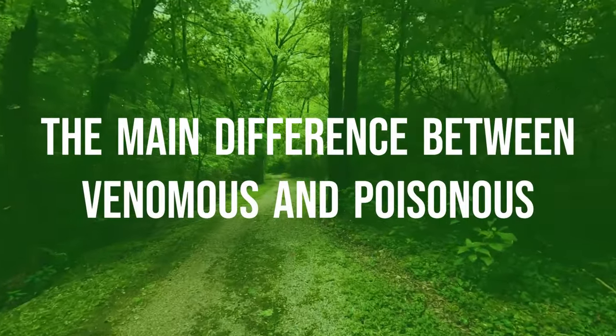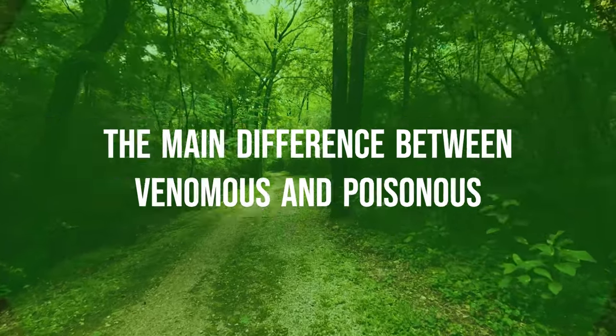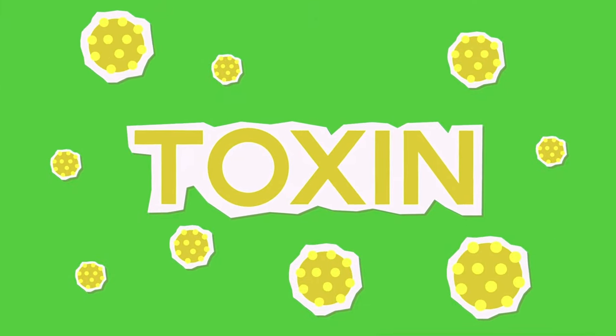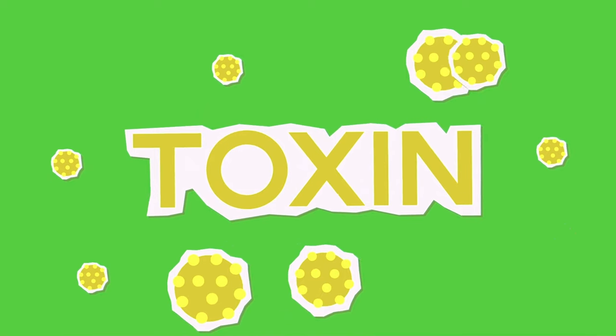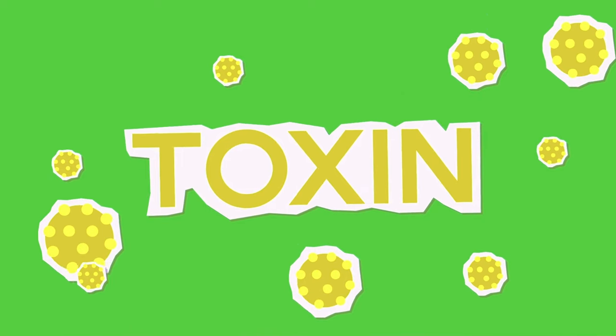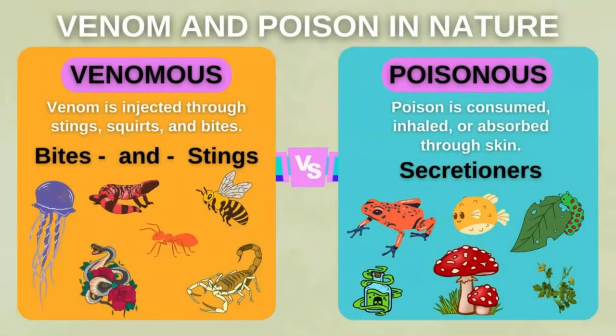The main difference between venomous and poisonous: the terms venom and poison refer to different situations. However, they are both dangerous and deadly toxins. Venom refers to the chemical substances injected by an animal during an attack through bites, needles, saliva, etc. Poison, on the other hand, is a chemical substance that is usually secreted by various living things in order to defend themselves.